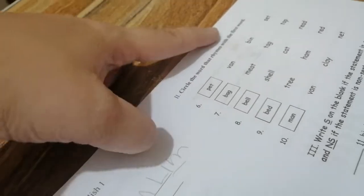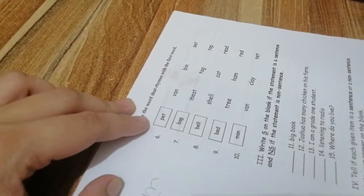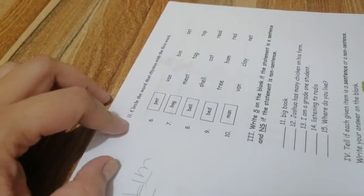Circle the word that rhymes with the first word. So ganon din, katulad nito. Oh wait, we have to circle it? Yes, you're gonna circle. That's easy. Next.